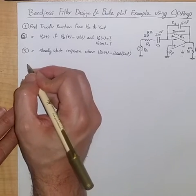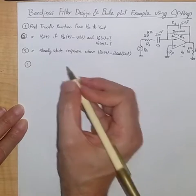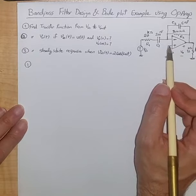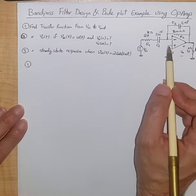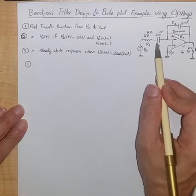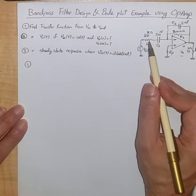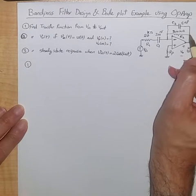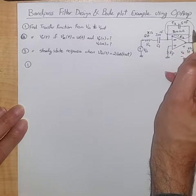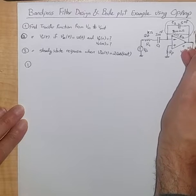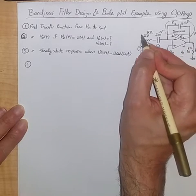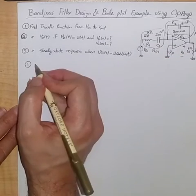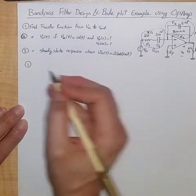Let's figure out the transfer function. For part one, assuming the op amp is operating in linear region, the virtual short between the two input terminals holds, so the inverting input is zero. This is a simple inverting amplifier configuration. Let's call the feedback element R_f and the input impedance Z_in, so we can identify the output impedance and input impedance.